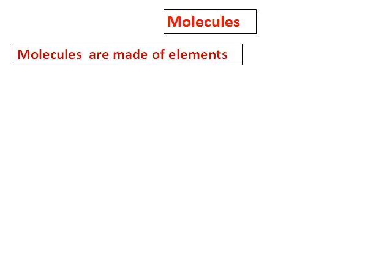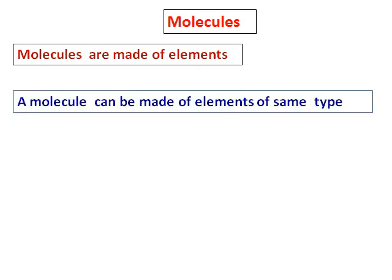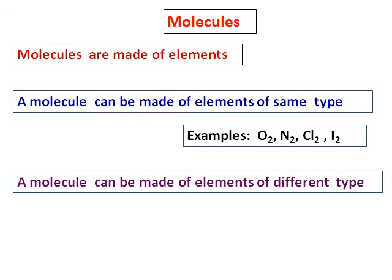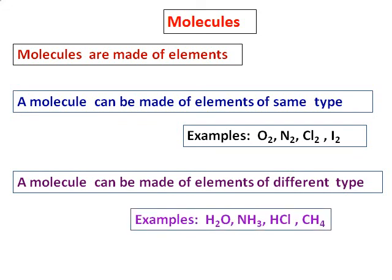We learnt about atoms and elements. Now, let's learn about molecules. Molecules are made of elements. And a molecule can be made of elements of same type. For example, oxygen, nitrogen, chlorine, iodine, which are made of two elements, O and O. A molecule can be made of elements of different type also. For example, H2O, which is made of hydrogen and oxygen, or ammonia, made of nitrogen and hydrogen, or HCl, made of hydrogen and chlorine, or even methane, which consists of two elements, carbon and hydrogen.